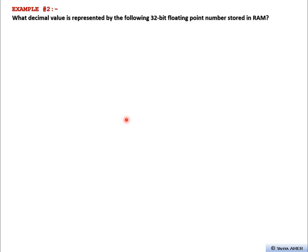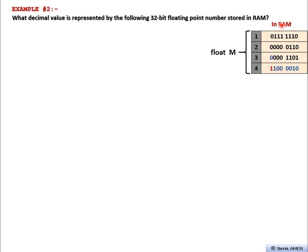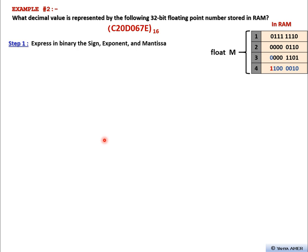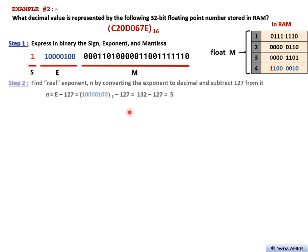Now we move to example 2 to make everything clear again. It gives us another chunk of memory and says these four bytes represent a float variable. Since it's a float, we use IEEE 754 format. Step one: identify the sign, exponent, and mantissa. The sign is 1, the exponent is the next 8 bits — 1 0 0 0 0 1 0 0 — and the remaining bits in black are the mantissa.